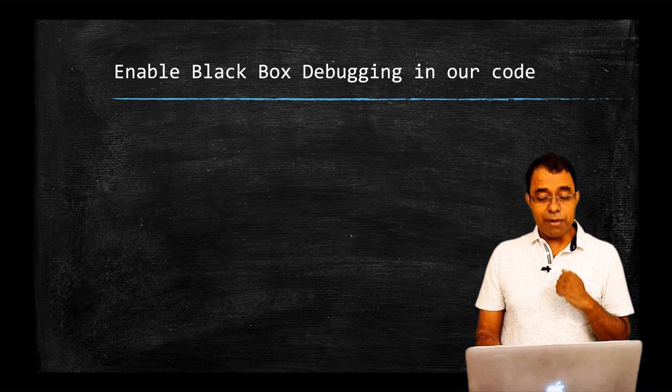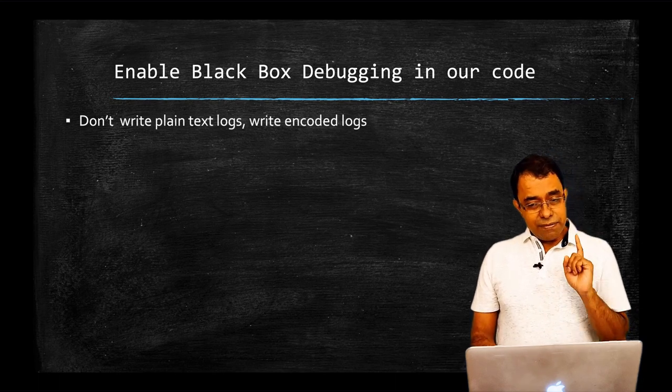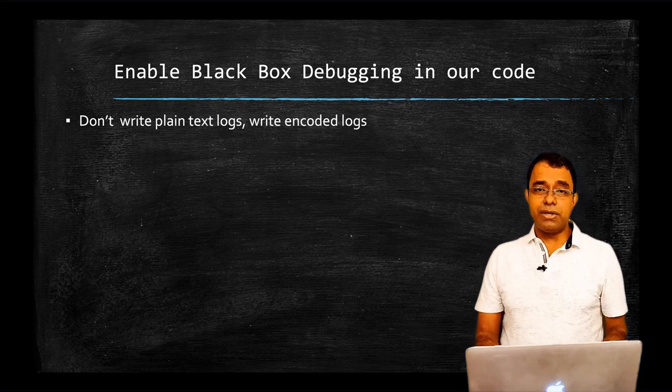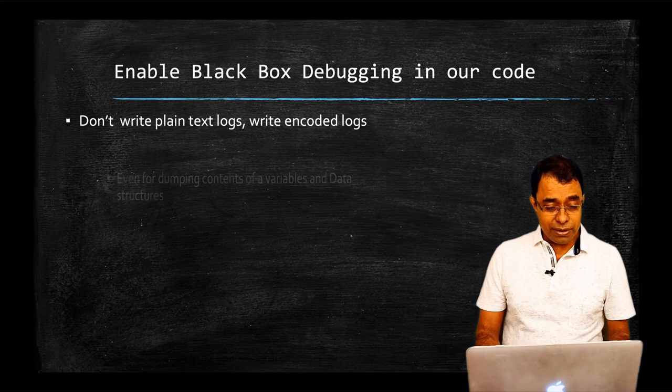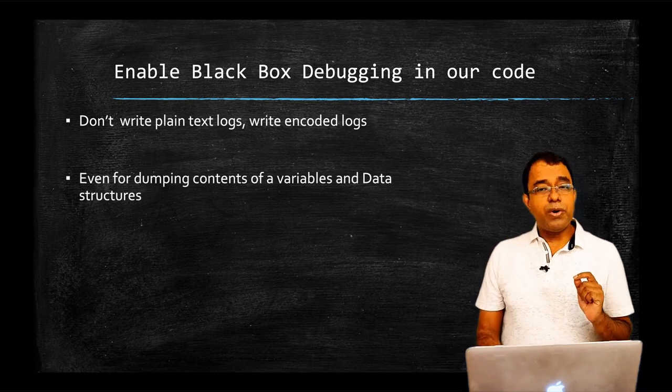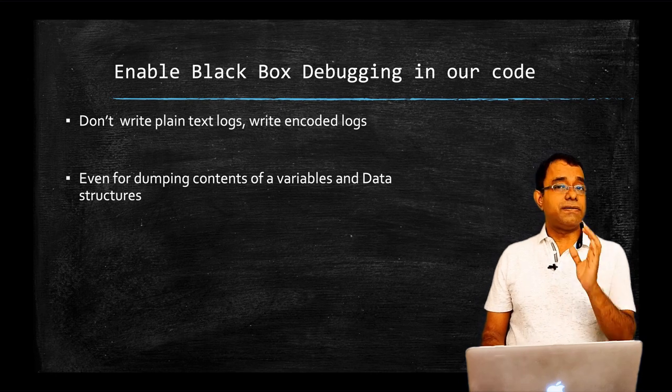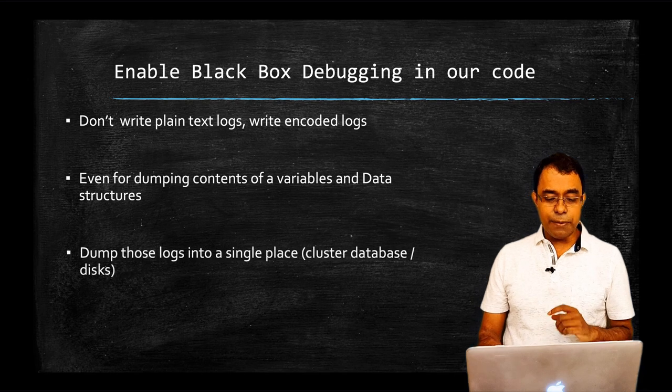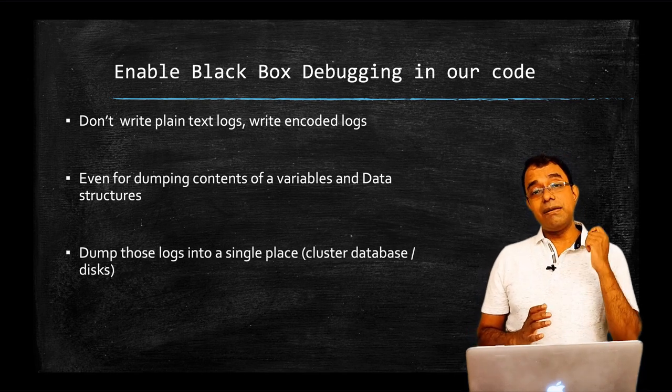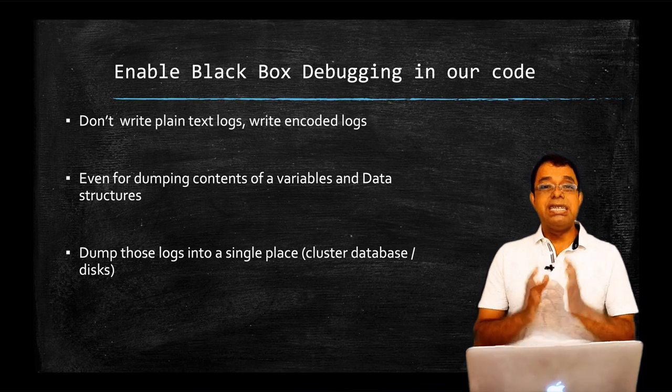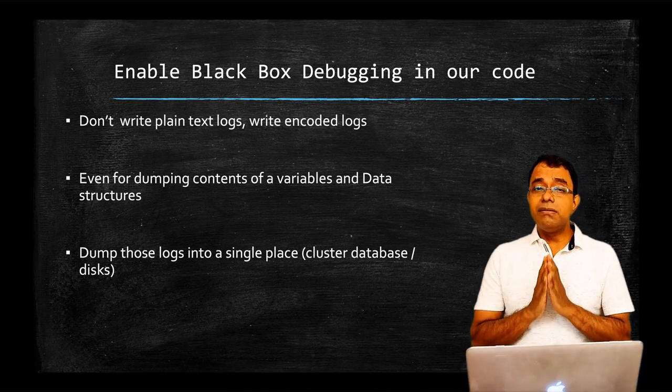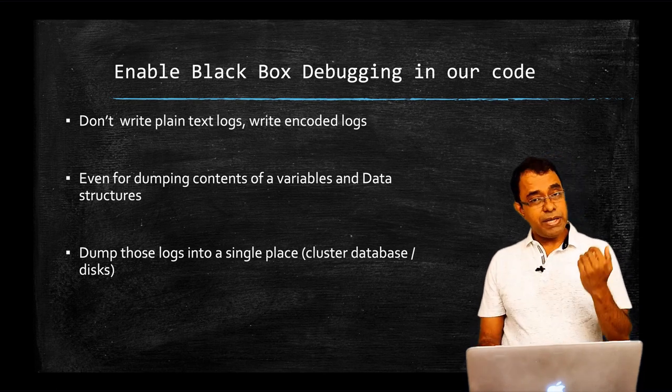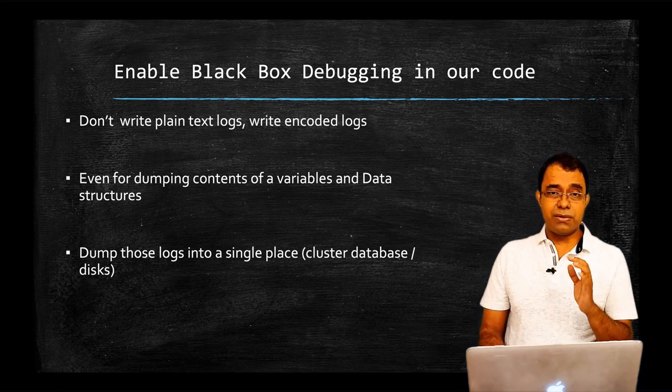And it is meant for the fact that if we understand system behavior, we know at what point of time, what happened and the chances of us finding the root cause increases drastically. Now, let's talk about enabling black box debugging in our code. First and foremost, the logs will not be written in plain text. We will write encoded logs. Don't worry. I will tell you how to create encoded logs. And even at some point of time, we need to dump the contents of a particular variable or data structure. Those also should be encoded. And all the logs, just like black box, which is there at a totally separate place, the logs must be kept at a place which is totally separated from the production system. Maybe a cluster database or cluster disk storage.